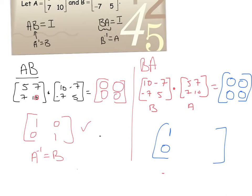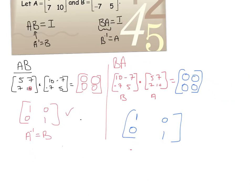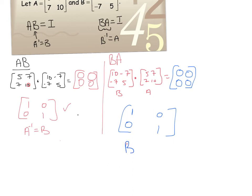We're also going to get the identity matrix. For row 2, column 2: negative 7 and 7 is negative 49, and 5 and 10 is 50. When I multiply and add those results together, I get a 1. That means B inverse is equal to A. So they are inverses of each other. For problems where you need to show that two matrices are inverses of each other, just multiply both orders, and if you end up with the identity matrix, they're both inverses of each other.